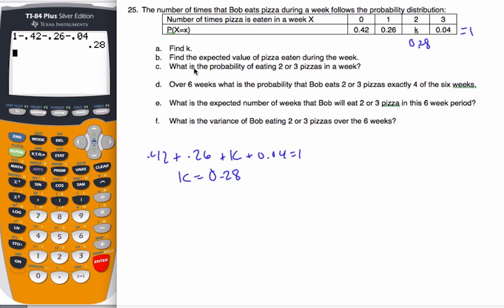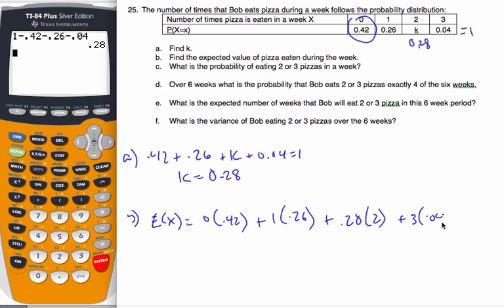All right, so next thing is find the expected value of pizza eaten during the week. To do expected value, in essence what we do is the expected value of x is 0 times 0.42 plus 1 times 0.26 plus the 0.28 times 2, and the 3 times 0.04. And then we crunch out what the value is.